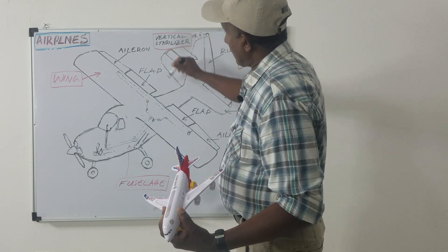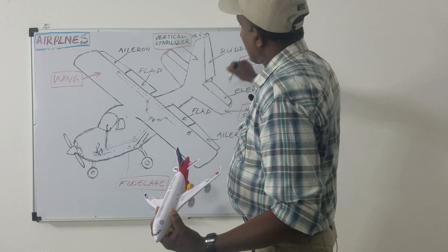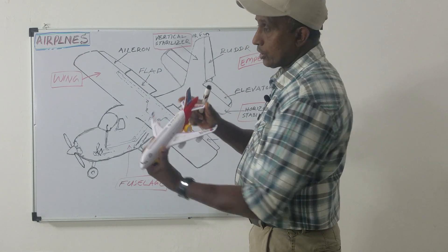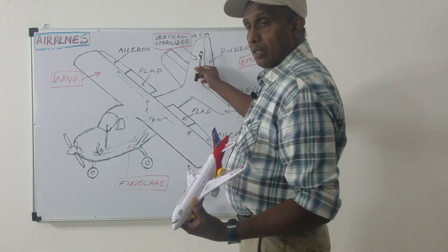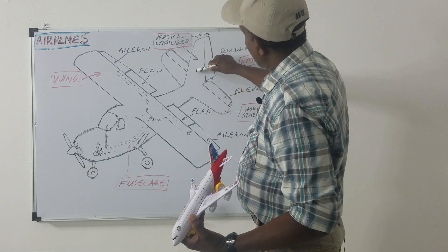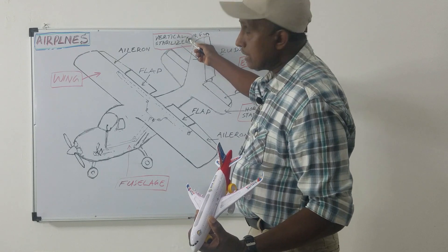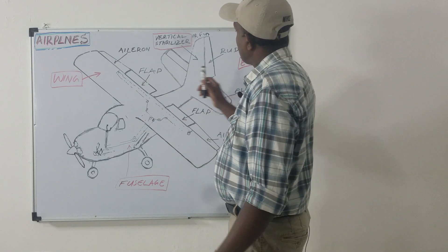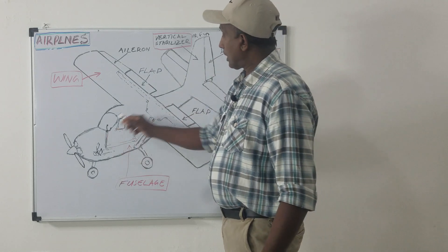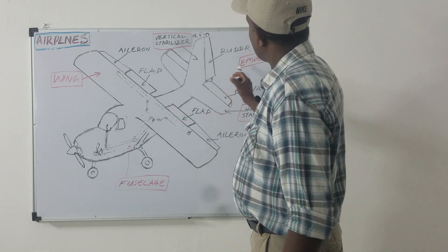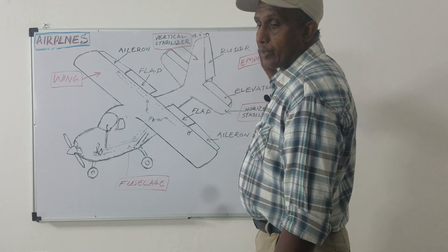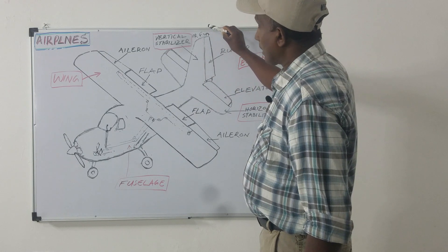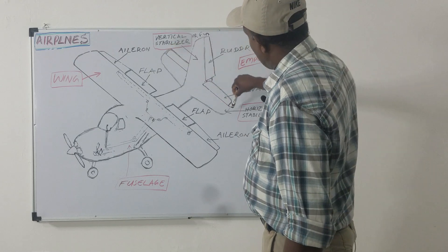The tail section of the fuselage is called the empennage. The empennage consists of two parts: the horizontal part is called the horizontal stabilizer, and the vertical part is called the vertical stabilizer, or fin. So now you know the major components of the aeroplane: fuselage, wings, and the tail section or empennage.